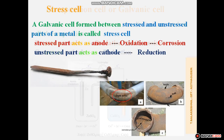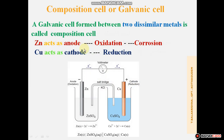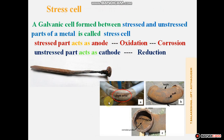Next is the Stress Cell. This is also a galvanic cell. A cell formed between the stressed and unstressed parts of the same metal is called a Stress Cell. The stressed area acts as the anode and the unstressed part acts as the cathode. The stressed parts undergo corrosion. Unlike the Composition Cell which forms between dissimilar metals, the Stress Cell forms within the same metal — whichever part is more stressed acts as the anode, and the less stressed part acts as the cathode.